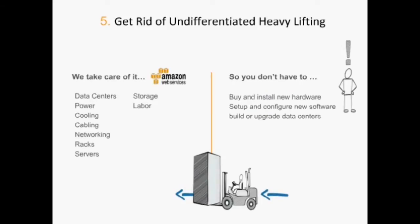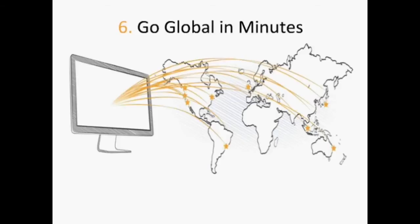With a few clicks of the mouse, you can go global. Anyone who has experience opening up a new data center in a new country knows how painful and time-consuming that can be. With Amazon Elastic MapReduce, you can have a cluster in U.S. East and replicate that cluster in Japan in a few clicks. This is one of the reasons we're seeing so many customers moving onto AWS.